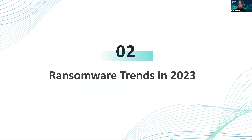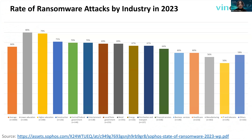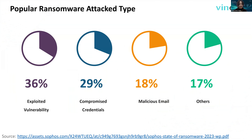Next, I want to share the ransomware trends reports from Sophos. They surveyed 3,000 cybersecurity and IT leaders globally. First is the rate of ransomware attacks by industry — we can see from the graphic that the average attack rate across every industry is about 65%. This means in 5 companies, 3 of them have suffered an attack at least once. Looking at popular attack types: exploit vulnerability, compromised credentials, and malicious emails are very common methods.